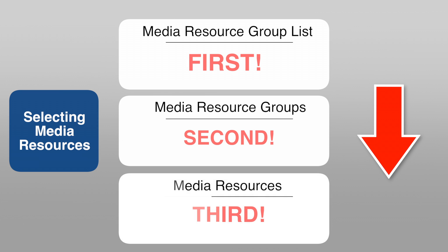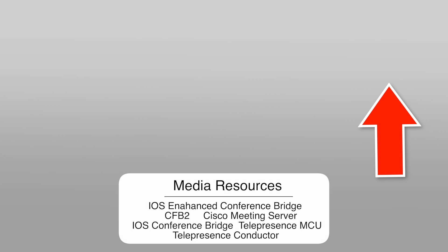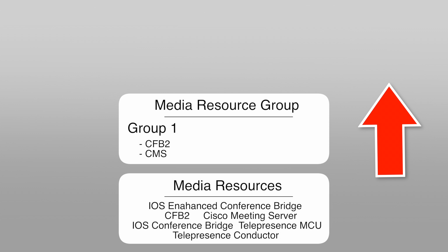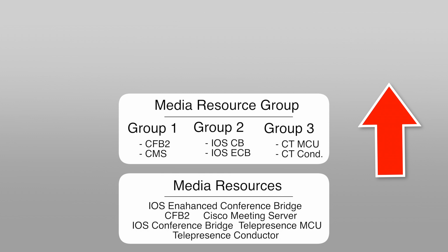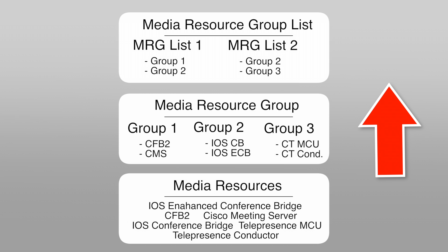When building your configuration you work bottom-up. Start with individual media resources — for example, CFB2, CFB3, Cisco Meeting Server, the iOS conference bridge, the enhanced conference bridge, the TelePresence MCU, and TelePresence Conductor. Group them: Group 1 has CFB2 and Cisco Meeting Server, Group 2 has the iOS and enhanced conference bridges, Group 3 has the TelePresence MCU and Conductor. Then put groups into lists: List 1 contains Groups 1 and 2, List 2 contains Groups 2 and 3.